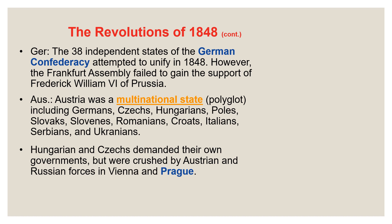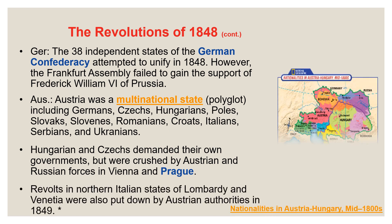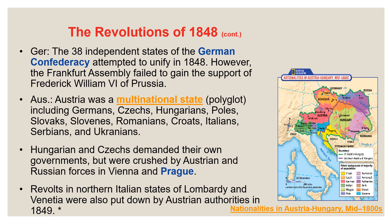Liberalism and nationalism ultimately failed to produce real results in the revolutions of 1848. Revolts in northern Italian states — Lombardy and Venetia — were also put down by Austrian authorities, another version of the 1848 revolutions failing. The Austrians who had control of northern Italy remained in control over Lombardy and Venetia. These areas would not be freed from Austrian control until the 1860s with the Italian unification movement.